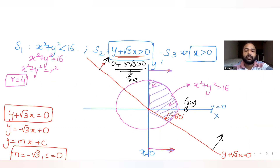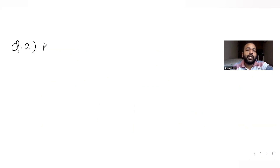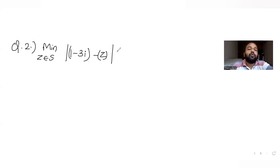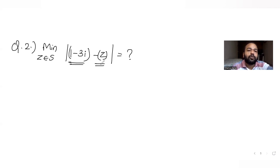Once we get all of these regions, we get the common region which is the shaded region. Now let's try to figure out the second part of the same question. We need to find the minimum value of z along the shaded region — specifically, mod of (1 minus 3i) minus z. The mod of something always gives us the distance between two points. Here z is x + iy, so the point is (1 minus 3i) minus (x + iy).